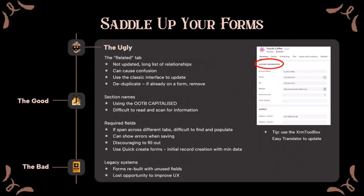Moving on to the ugly: poorly designed forms with unnecessary required fields and unused legacy data can really frustrate users and hinder productivity. Consider hiding the related tab, as it can be confusing for some users. I find that out-of-the-box capitalized section names are quite ugly — they are harder to read and draw too much attention. However, you can use the Easy Translator tool to quickly update them. Always try to leverage quick create forms for the initial record creation instead of forms with multiple required fields.